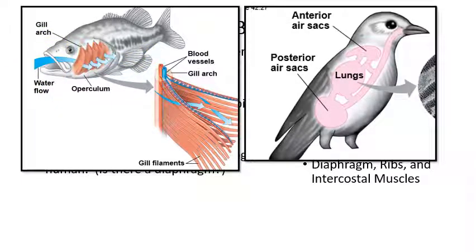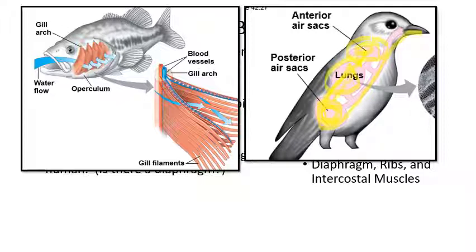Birds are continuous-flow air breathers. They have a set of lungs, and then they have two air sacs — an anterior air sac and a posterior air sac. They inhale air into the posterior air sac, then blow it continuously over the lung tissue and into the anterior air sac. So they're not filling the lungs with air and pushing it back out the way humans are — they manipulate the two air sacs so that there's a continuous flow of air containing fresh oxygen over the lung tissue.